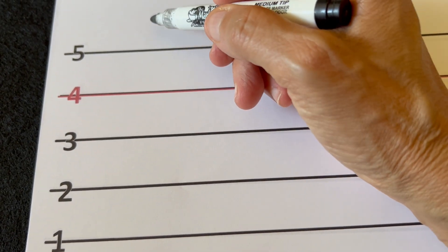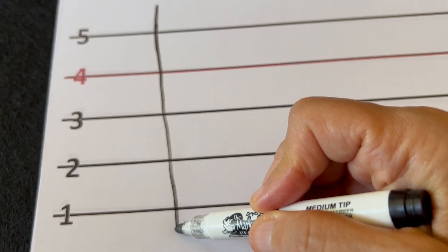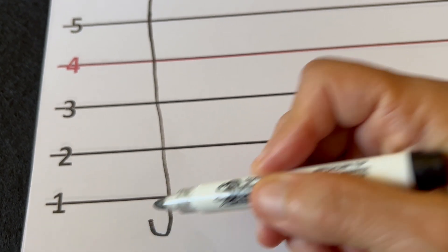And now we're going to start with the letter J. We're going to go above the fifth line and we go under the first line with our J.